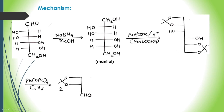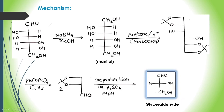Lead tetraacetate is then used for cleavage of the protected form of D-mannitol. It cleaves between two carbon atoms and gives two molecules of the aldehyde. In the last step, deprotection using aqueous H2SO4 gives the D-glyceraldehyde molecule. This is the simple mechanism to prepare D-glyceraldehyde using D-mannitol as the chiral precursor via the chiron approach.